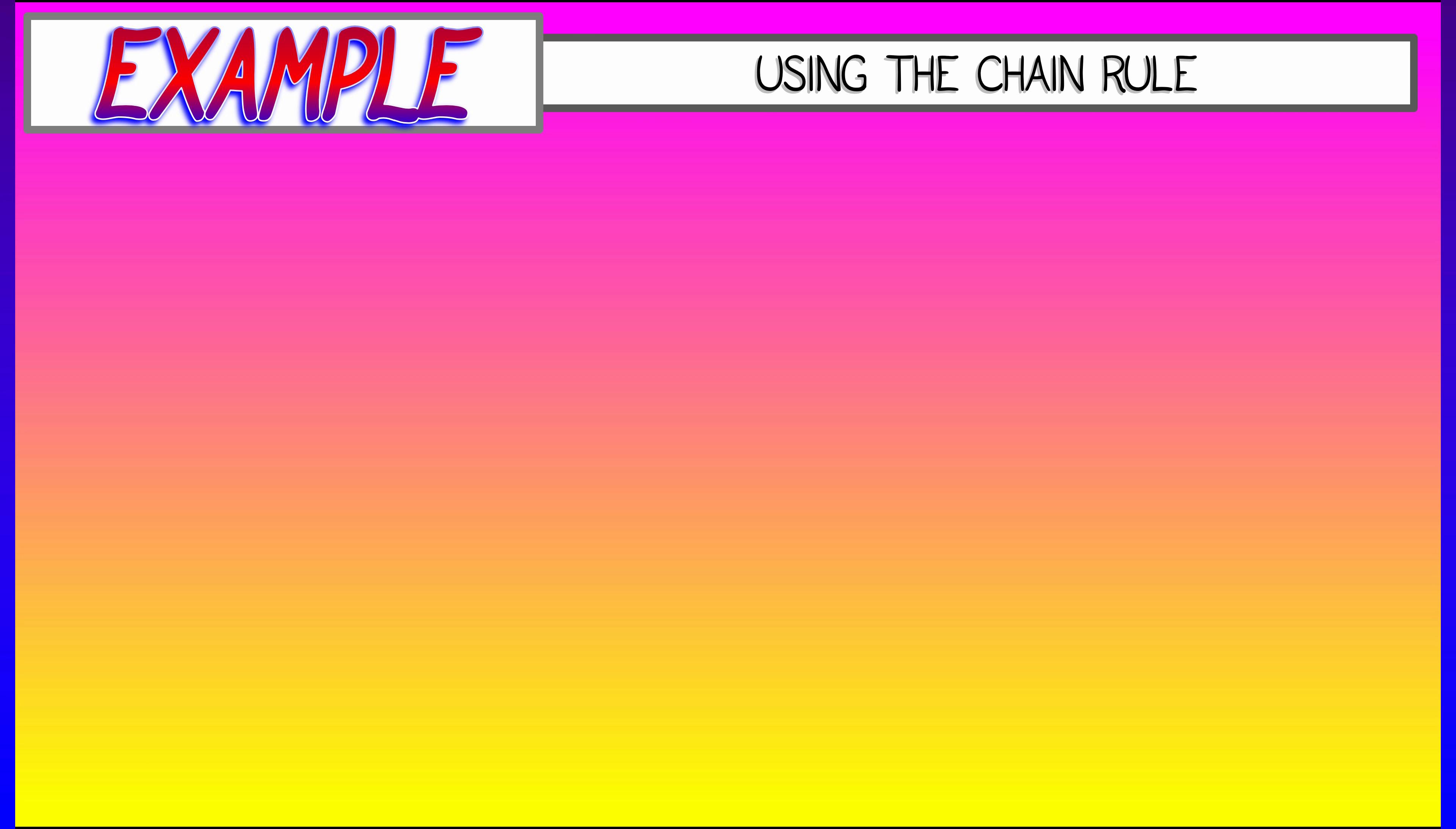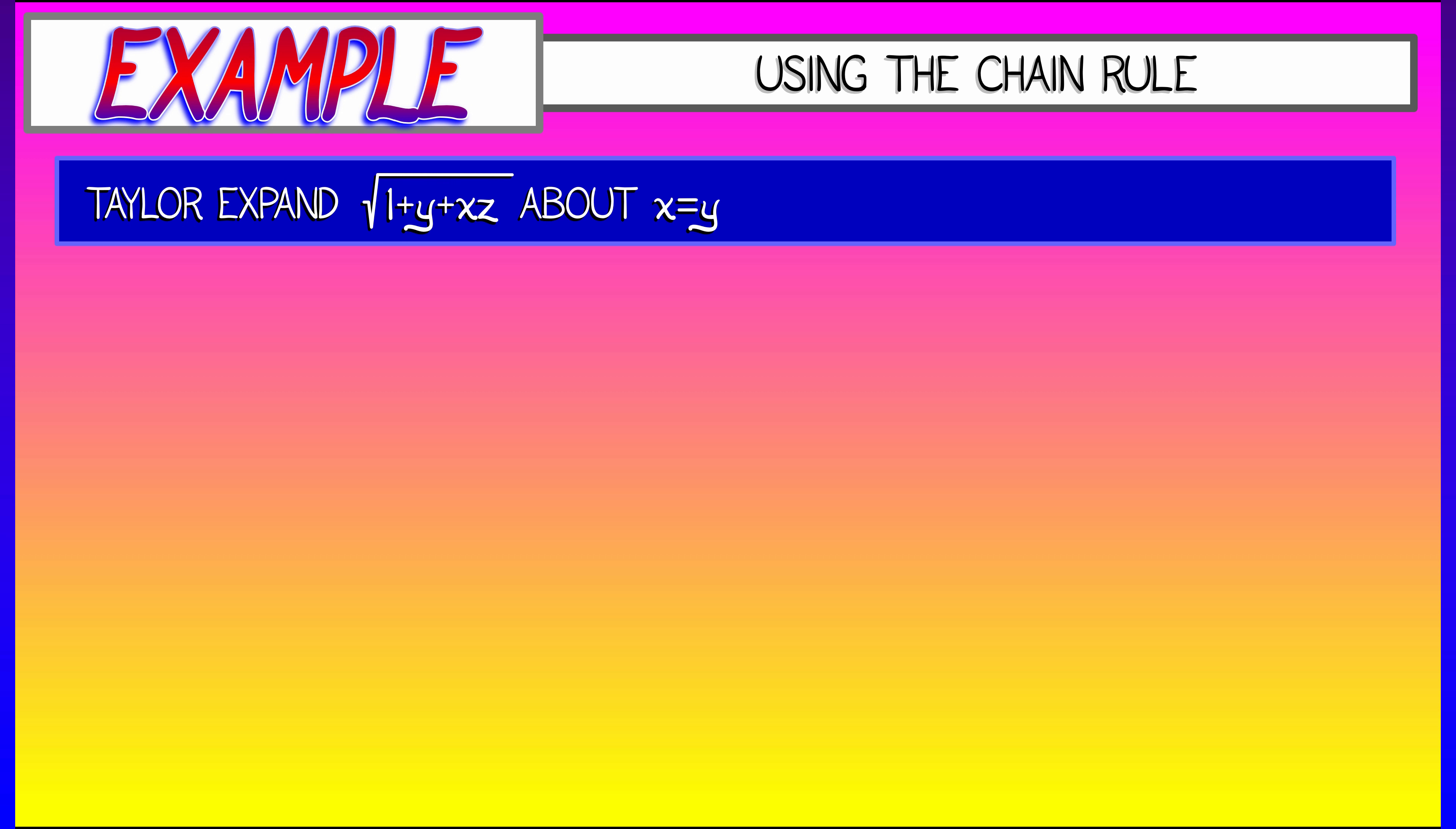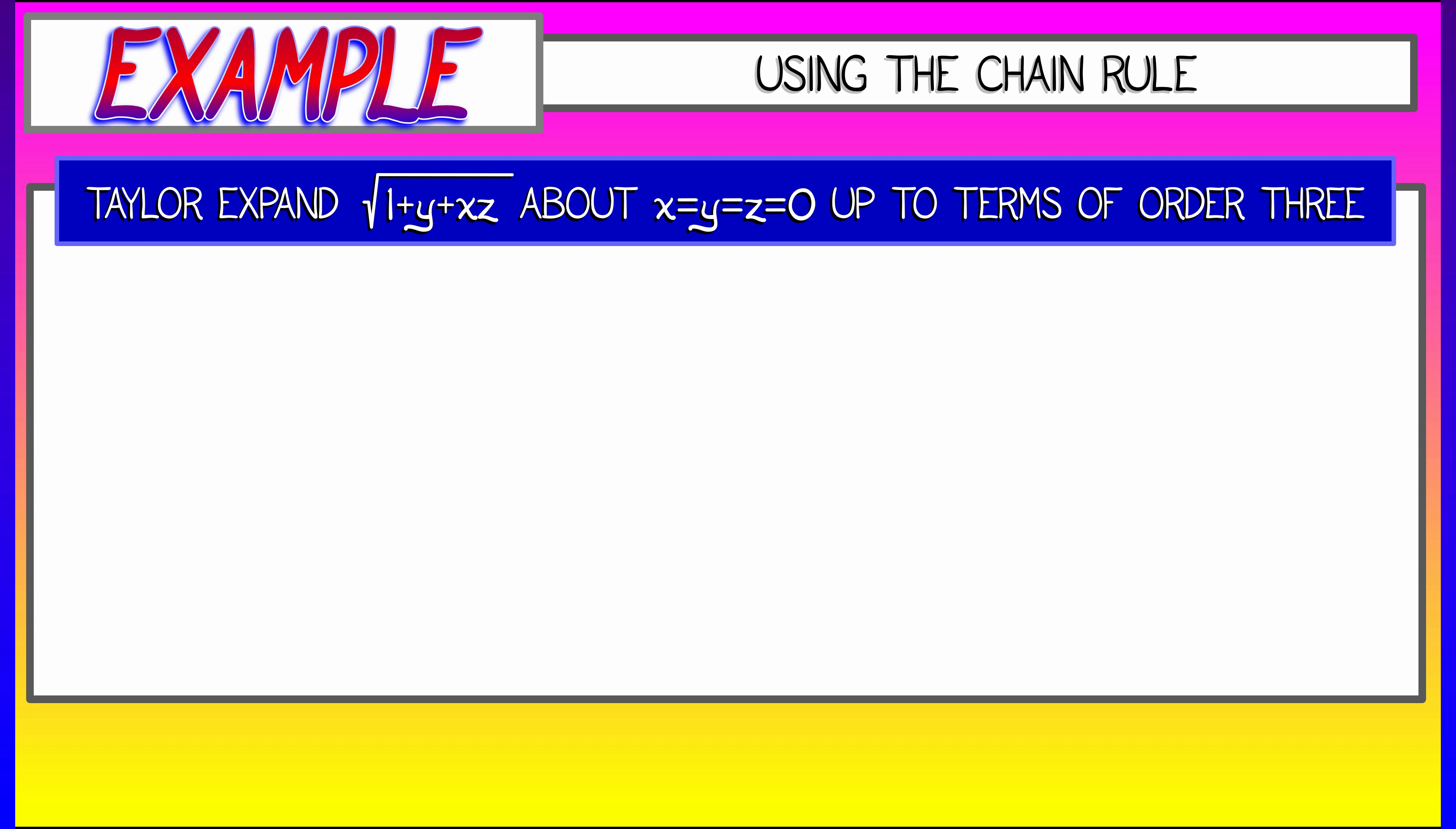Okay, here's an example that would be just awful doing it step by step. Consider square root of 1 plus y plus x times z about x equals y equals 0 up to and including terms of order 3. Oy yoy yoy. That would be bad unless we let smiley equal y plus xz. And then I've really got 1 plus smiley to the 1 half. But I remember the Taylor series to that. It's 1 plus smiley over 2 minus smiley squared over 8 plus smiley cubed over 16, and then fourth order and higher terms.